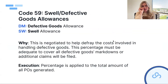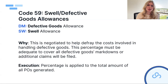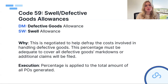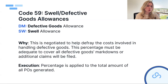Next, an allowance example: Code 59, the Swell/Defective Goods Allowance. 'DM' stands for defective goods allowance; 'SW' stands for swell allowance. This is negotiated when setting up your contract with Walmart. Its purpose is to help defray costs involved with handling defective goods. It's a percentage-based allowance applied to the total amount of all POs generated — helping cover defective goods markdowns or additional claims Walmart may file.